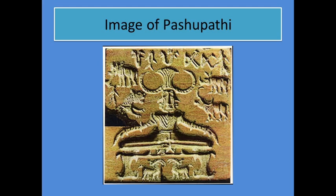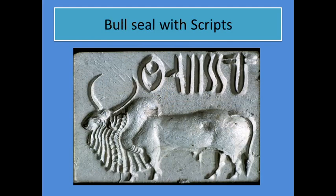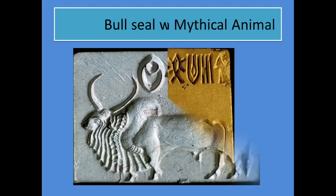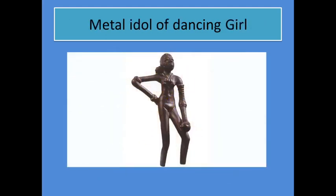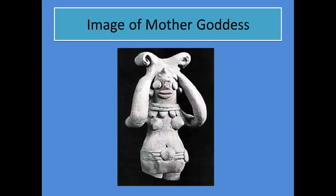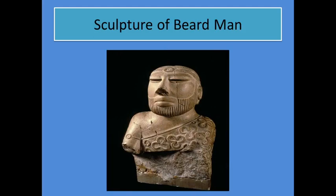Here you can see the image of Pashupati Shiva, a bull seal with scripts, a unicorn seal with mythical animal, a metal idol of the dancing girl, an image of mother goddess, and a sculpture of the bearded man.